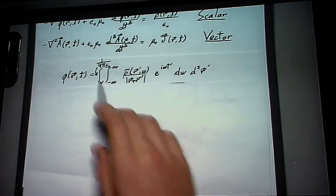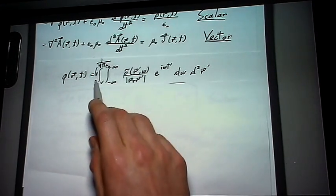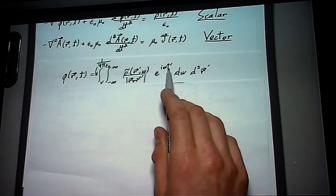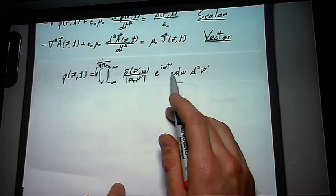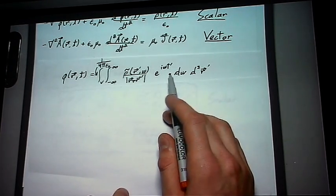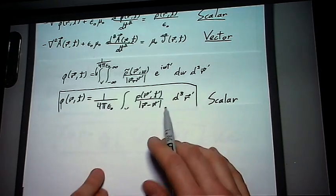Okay, so we're on the final stretch here. There should be a 1 over 4 pi epsilon up front, and so I replaced in my t prime. What we're going to do is we're going to do a Fourier transform once again. This is the last time.